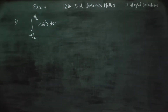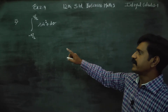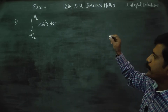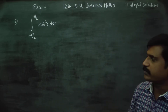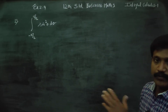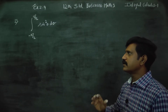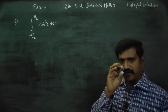Dear 12th standard business math students, in exercise number 2.9, sum number 2, the limits are from minus pi by 2 to pi by 2. We are going to use properties of definite integral to solve and evaluate this problem.